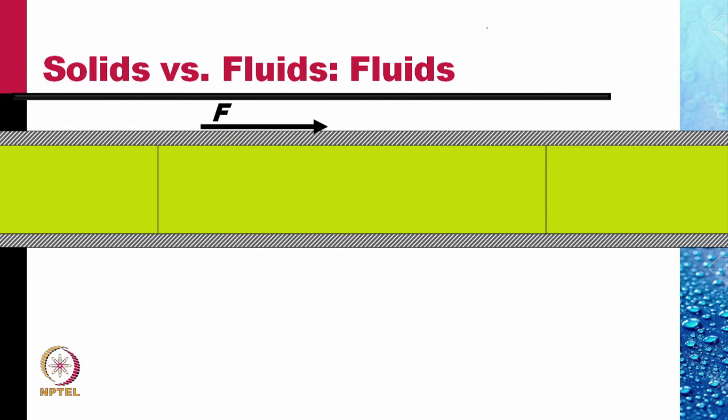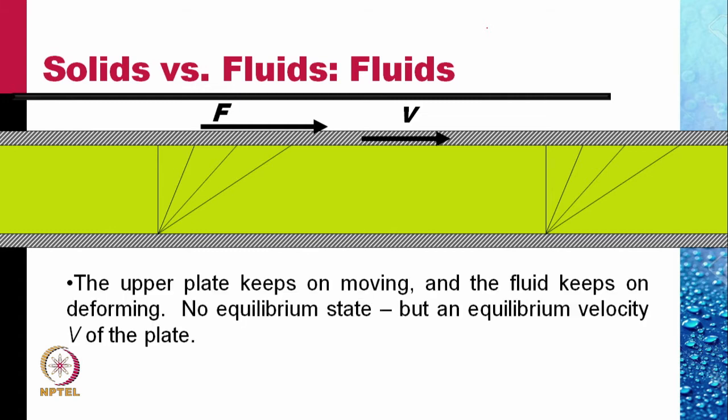Now, if the substance, the green substance, was not a solid but a fluid. I marked two lines. When you apply a force F, the upper plate never stops, it keeps on moving. And ultimately it accelerates first, but ultimately acquires a velocity V. What does that mean? The upper plate keeps moving and the fluid keeps on deforming. No equilibrium state, but an equilibrium velocity V of the plate.